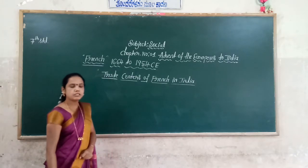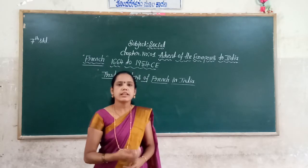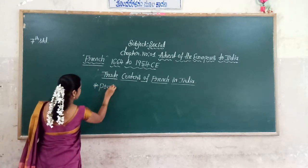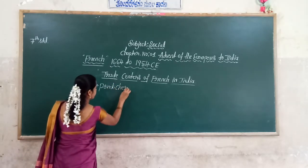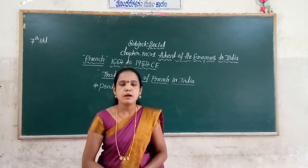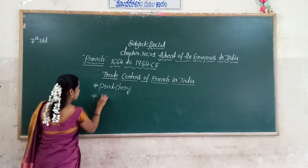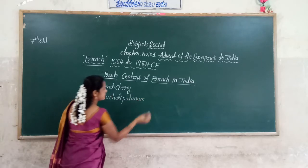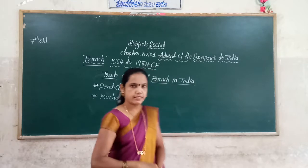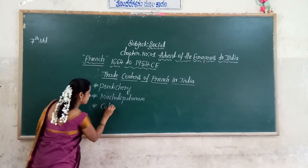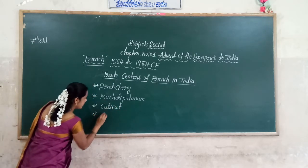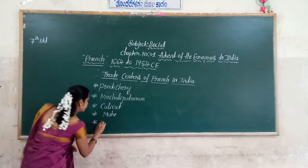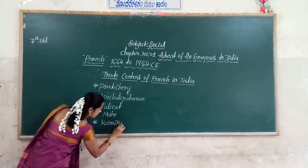When they were establishing their trade centers in India, they stored their trading centers. The first place is Pondicherry, the second one is Mahe, next one is Karikal, and next one is Chandranagar.